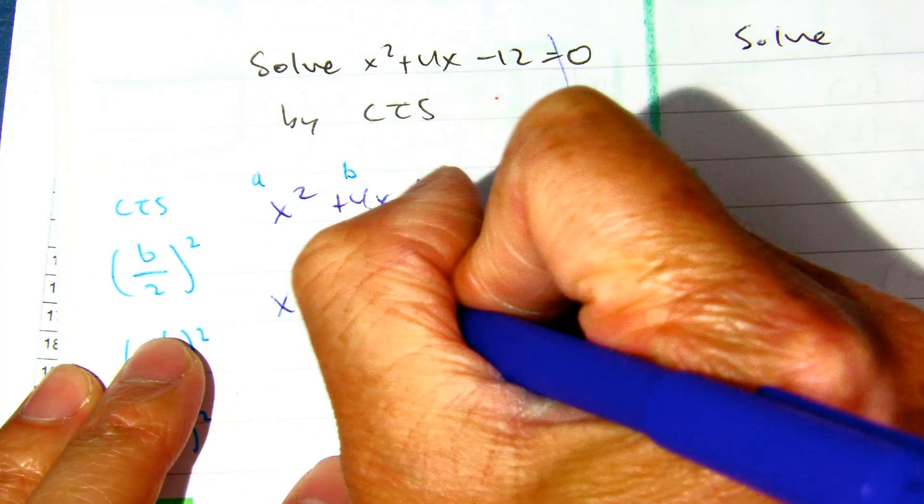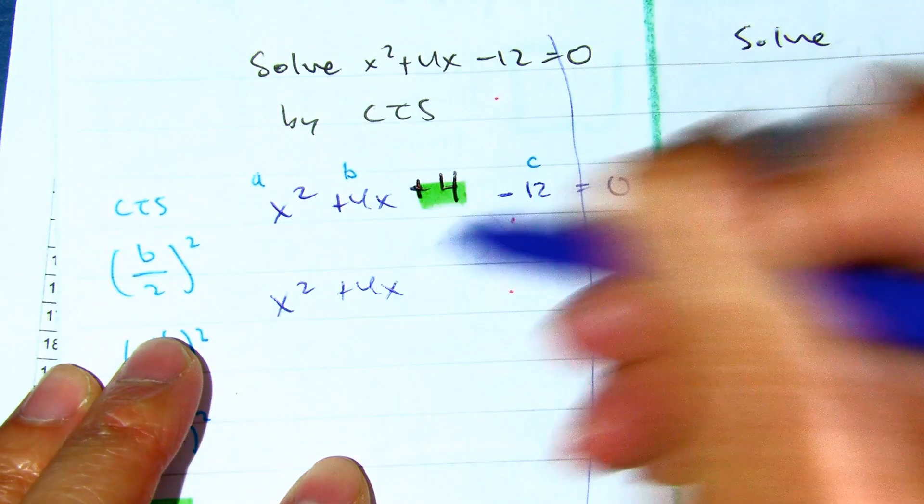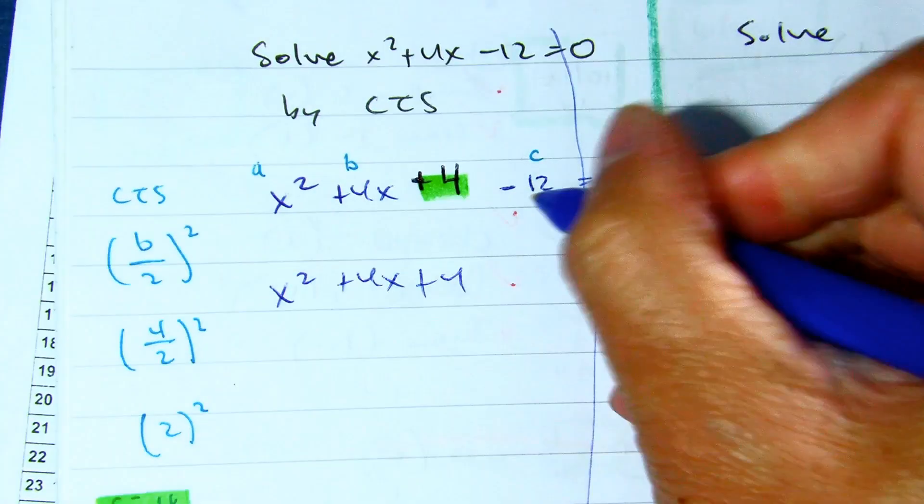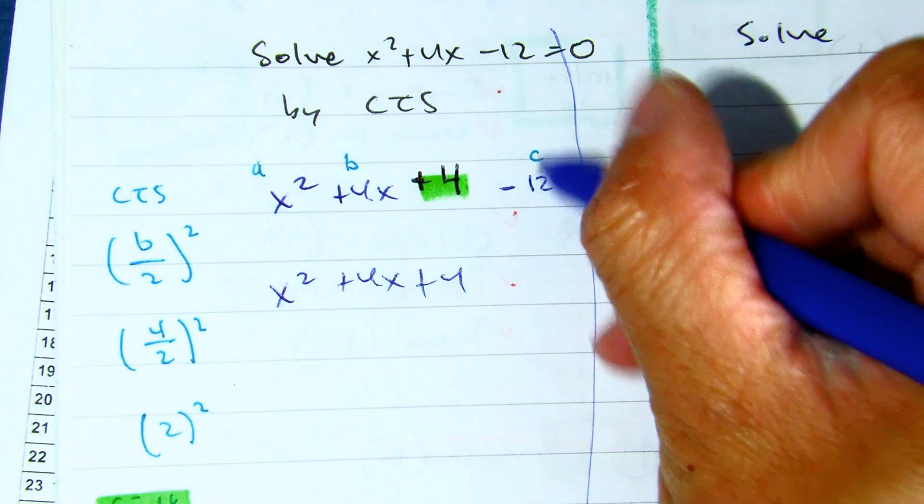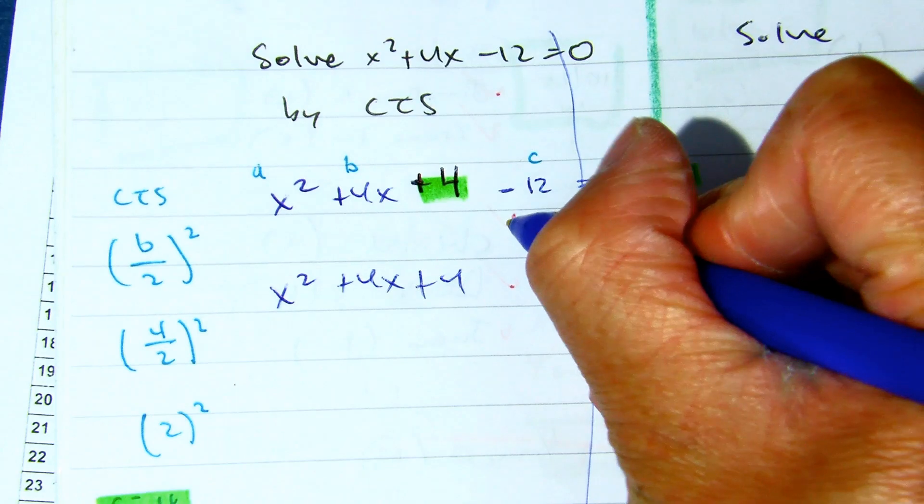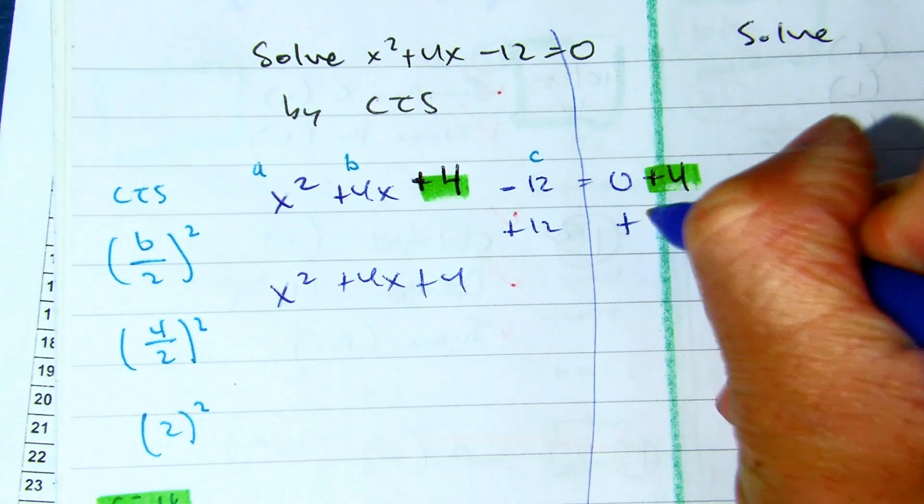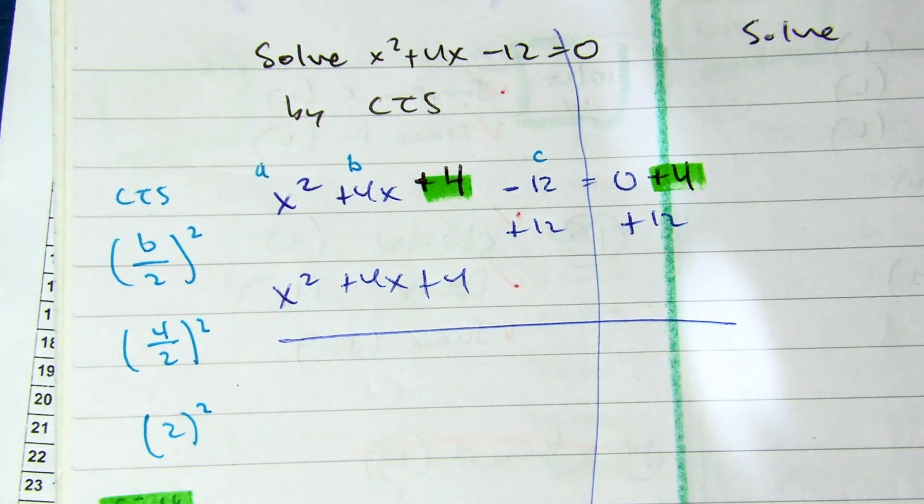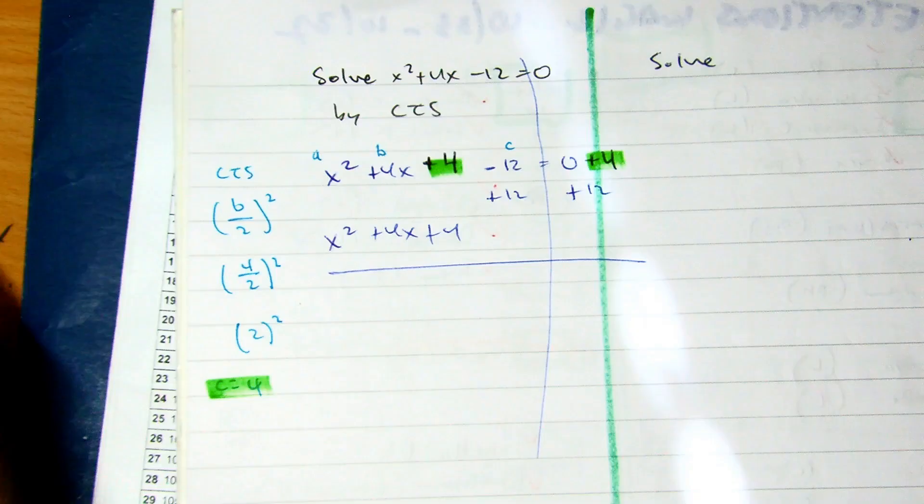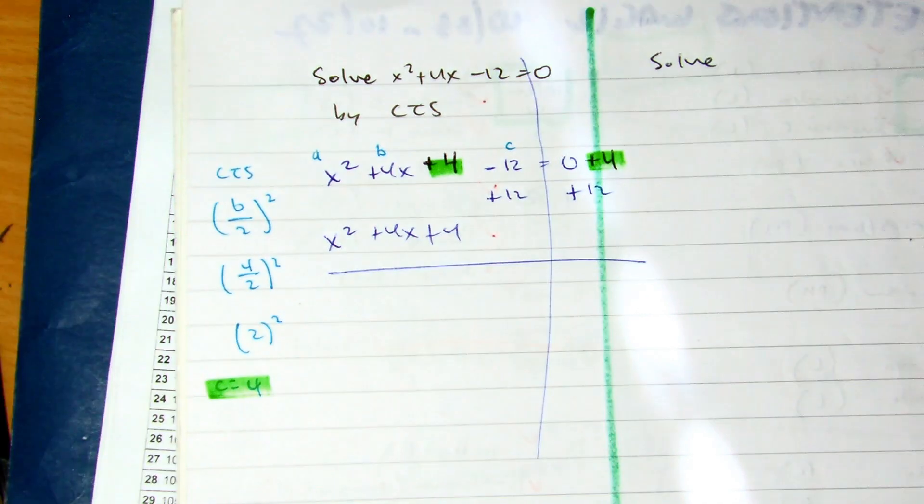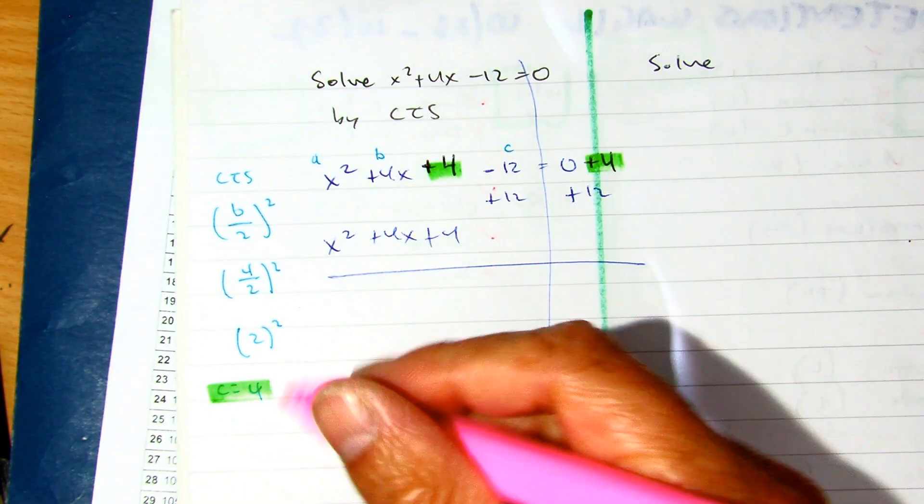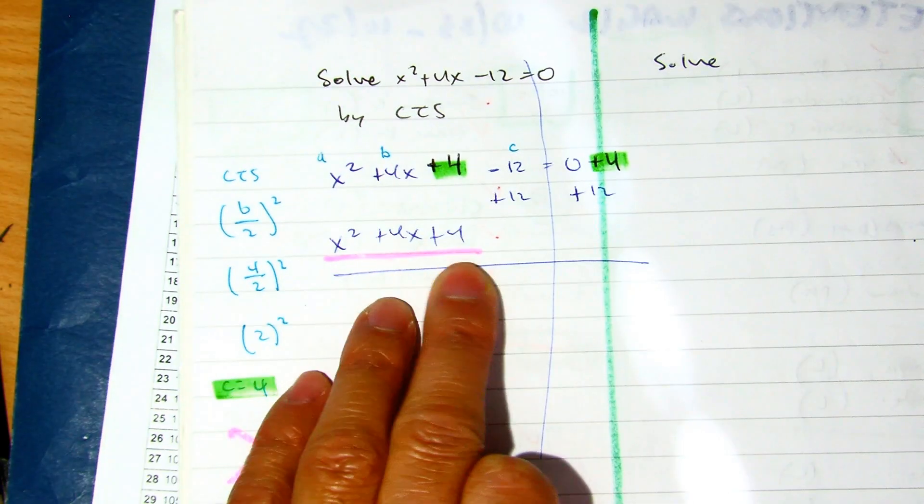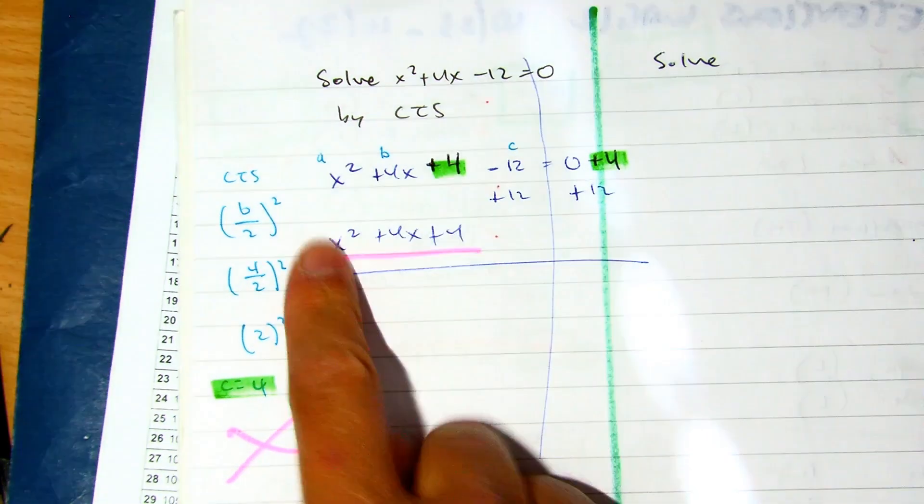Okay, so then I have x² + 4x + 4. This c value you can move to the right side, we're going to have to do that anyways, and then you can factor this one. Class, do you need the x in the box? If a is equal to 1, then you don't need it.